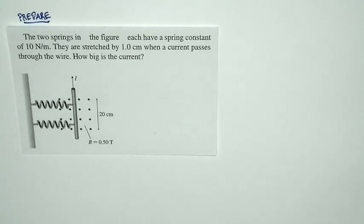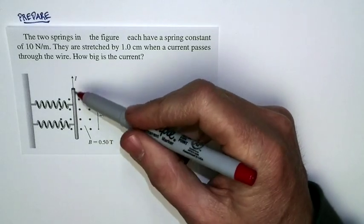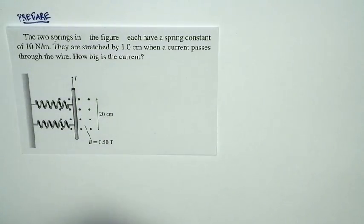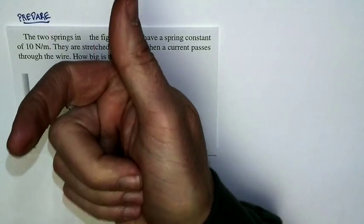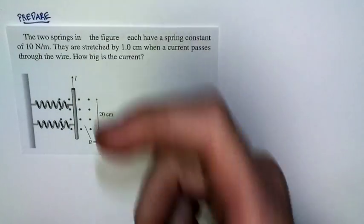Well, these two springs are stretched when a current passes through the wire, and here's why. A current's going in this direction, magnetic field's coming out of the paper. Current in this direction, magnetic field out of the paper, predicts a force to the right.